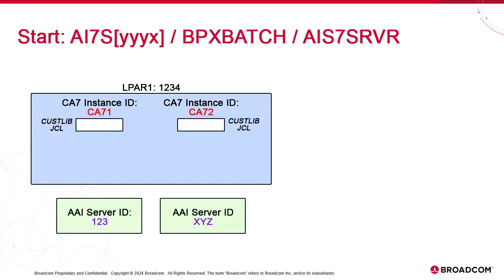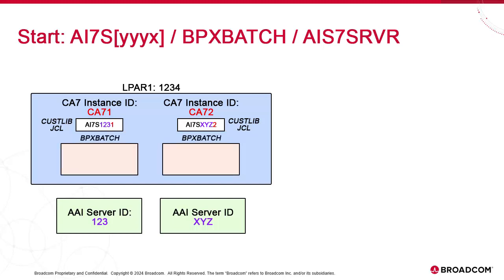The instance procedure is a JCL called AI7S followed by four characters: the three-character AI instance ID and the last character of the CA7 ID. As a result, the first JCL is called AI7S1231 while the second is AI7SXYZ2. To start the instance, we simply execute this JCL. It invokes BPXBatch and starts the USS environment. It also passes a UNIX executable, AIS7SRVR, which is the server STC code. The instance starts.